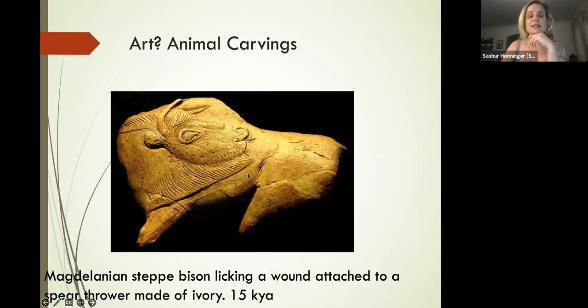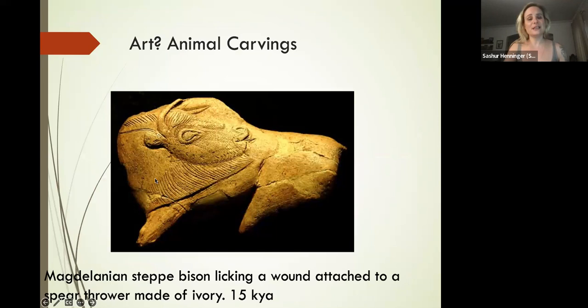We have other animal carvings. This is an example of a steppe bison at the end of a spear thrower, similar to the one I showed you earlier. This one's made of ivory—about 15,000 years old.